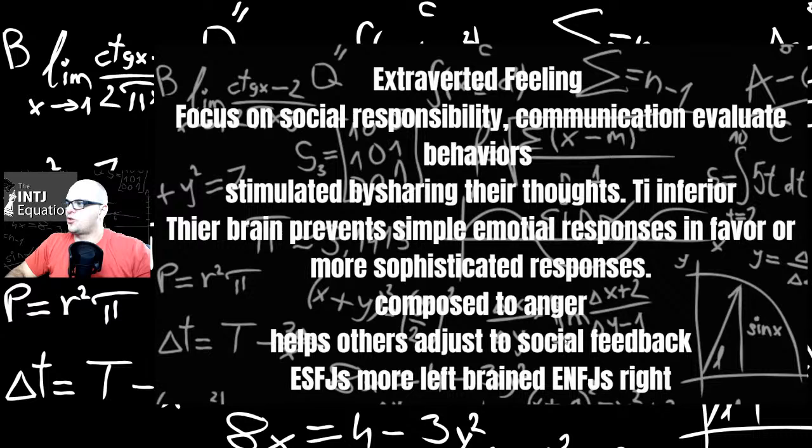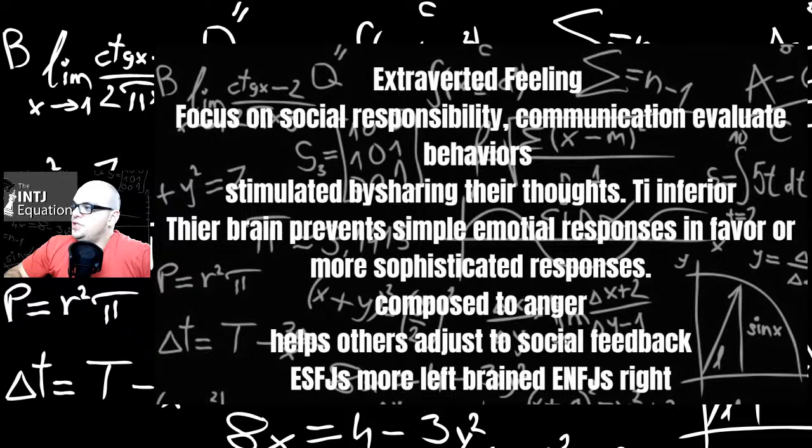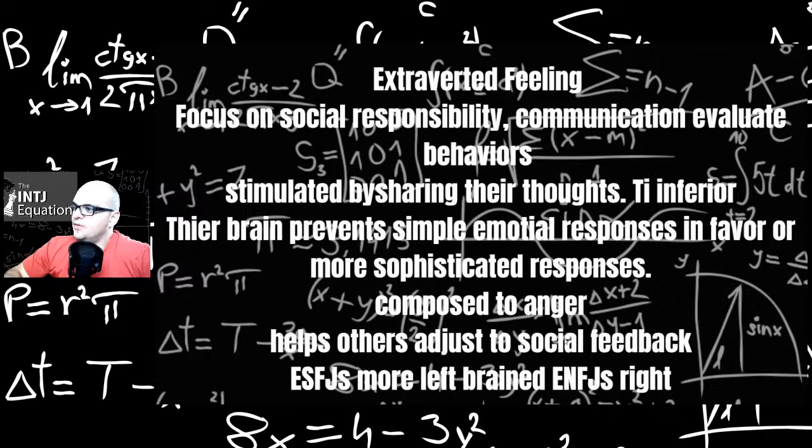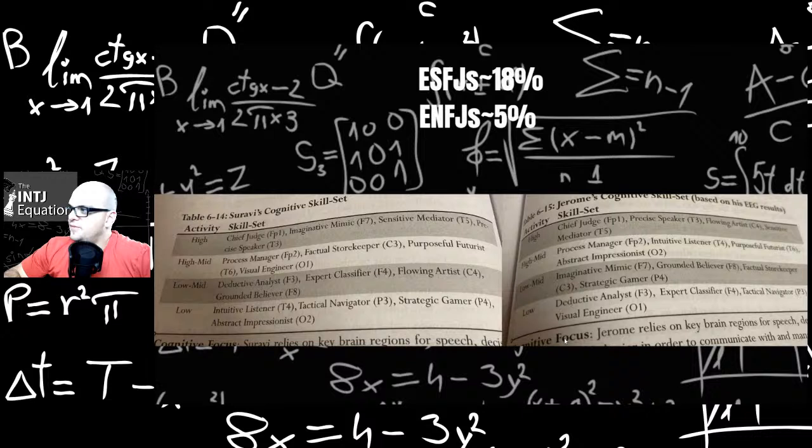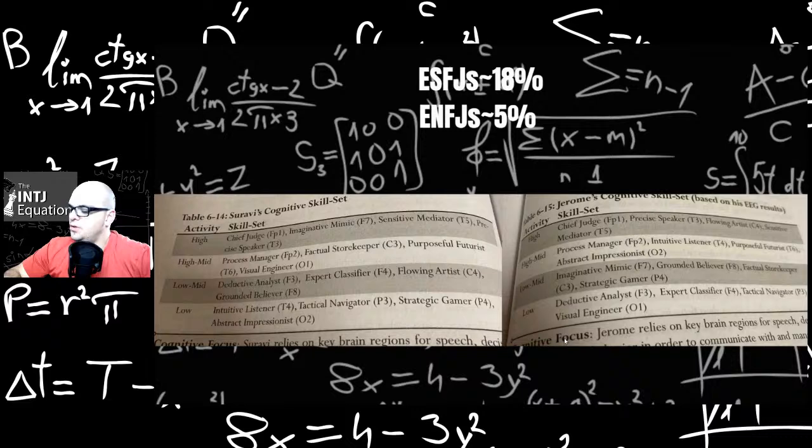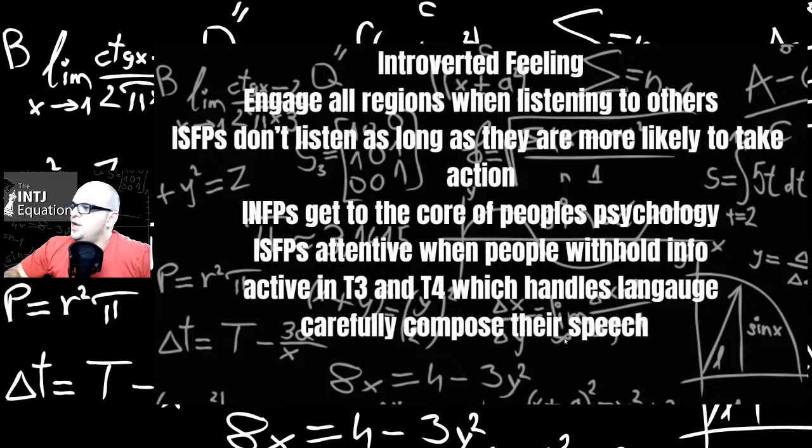Extroverted feeling. Focus on social responsibility, communication, evaluate behaviors. Stimulated by sharing their thoughts. Ti inferior. You ever watch a Neil deGrasse Tyson interview? He's an ENFJ and he just loves blabbing about what he knows. Looking smart. Their brain prevents simple emotional responses in favor of more sophisticated responses. It's kind of interesting because they kind of just act emotional in the moment, it seems like to me. Compose to anger. Helps others adjust to social feedback. ESFJs are more left-brained and ENFJs are more right. ESFJs are about 18% of the population. ENFJs are about 5%. I honestly haven't met too many ENFJs in a while. Maybe they're mistyped ESFJs perhaps.